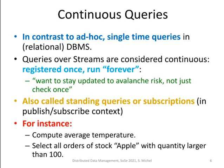In contrast to ad hoc queries, which are usually executed only once in relational database systems, here we talk about continuous queries, which are registered to the system and in principle run forever. For instance, a query could be like this: you want to stay updated on avalanche risk, not just check once how risky it is before you go skiing, but on the way to the skiing resort you always want to be updated on that risk. So this is a continuous query, also called a standing query or subscription. Subscription is often used in the publish-subscribe context. There are plenty of applications, for instance monitoring the average temperature outside or in your CPU, or selecting all orders of the stock Apple with quantity larger than 100 if you're monitoring the stock market. And you want to do this continuously, not only one time.